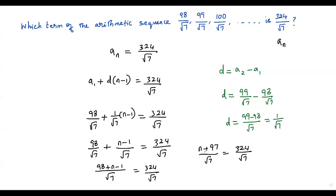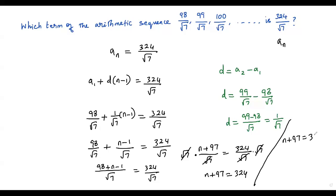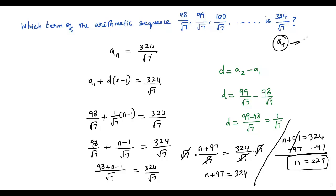Since both sides have the same denominator √7, we multiply both sides by √7 to cancel it, giving: n + 97 = 324. Subtracting 97 from both sides, the 97s cancel and we get n = 324 − 97 = 227. Therefore, 324/√7 is the 227th term of the given arithmetic sequence.